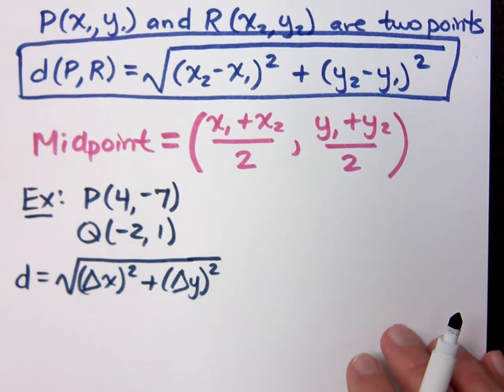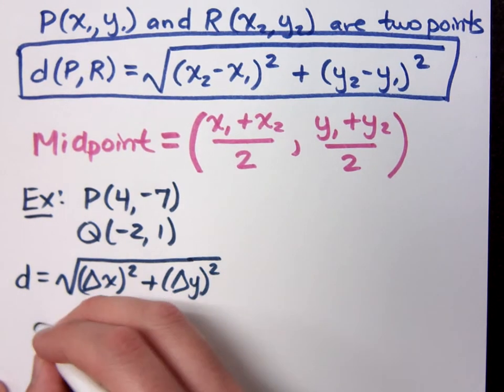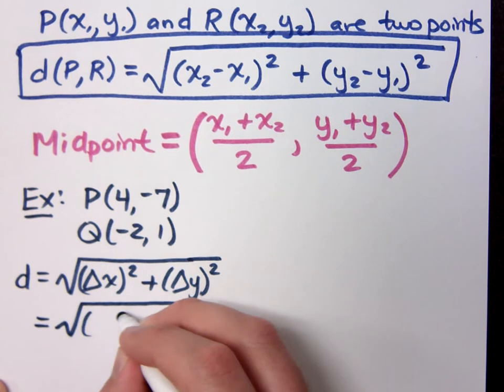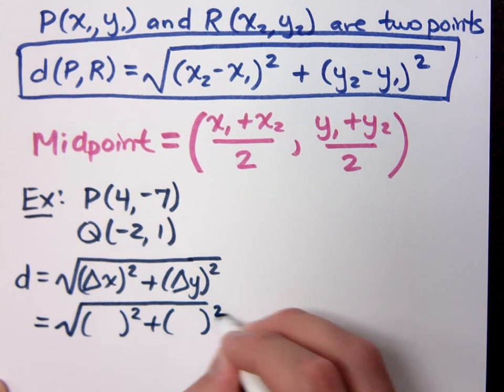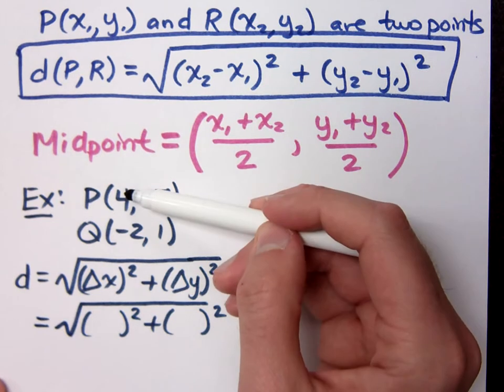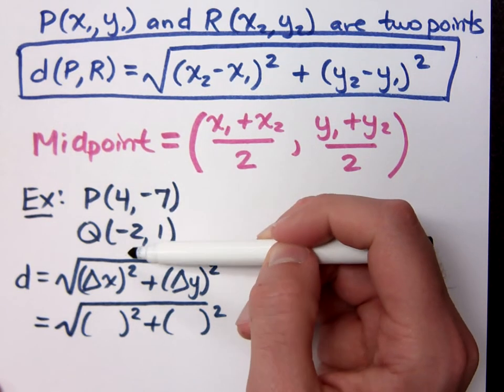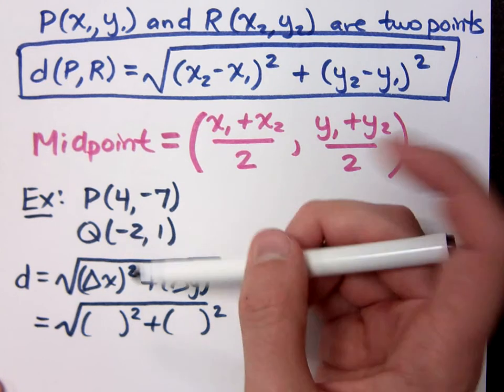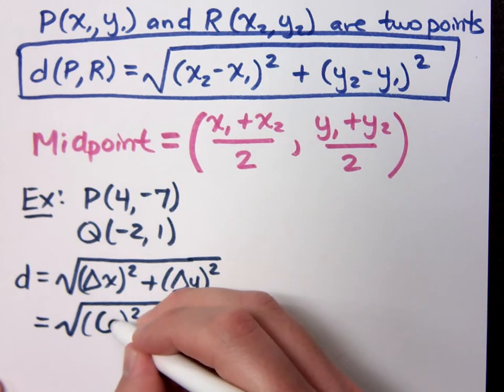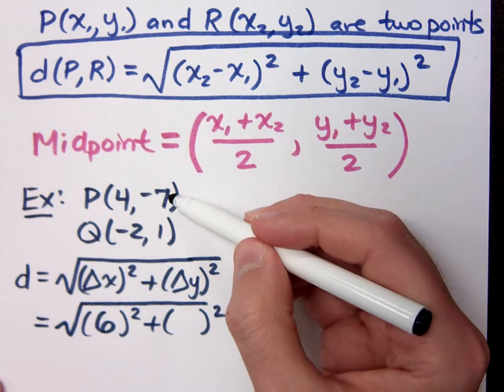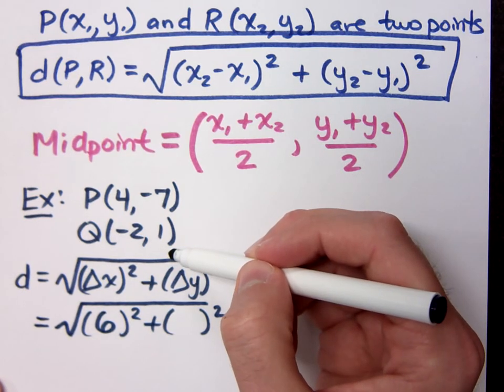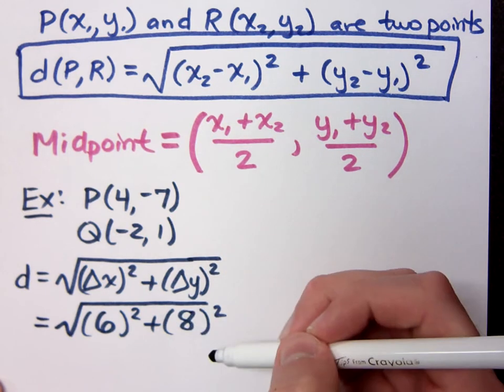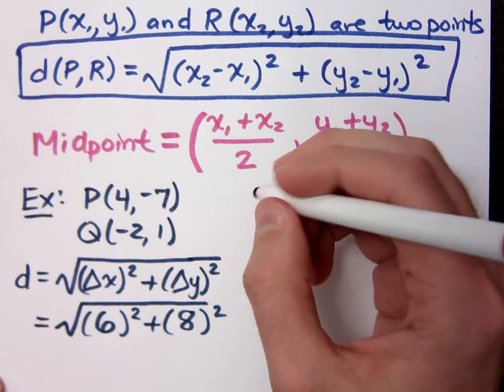All right, so let's see what happens here. What is the change in x? My x values are 4 and negative 2. What's the difference between those guys? The difference between those guys is 6, right? What's the difference between negative 7 and 1? They are 8 units apart. Do y'all agree? And if you're not sure about that, you come off here to the side and you think about this.